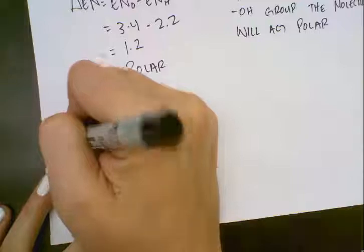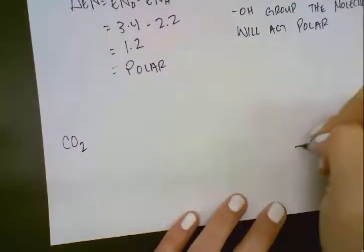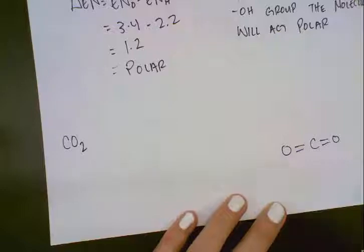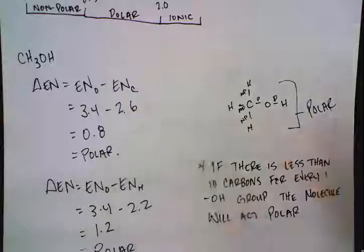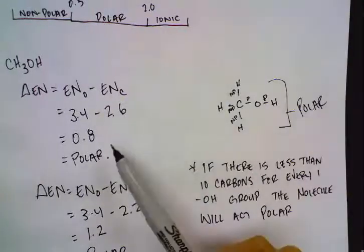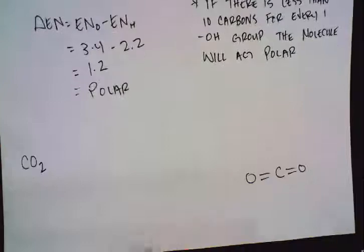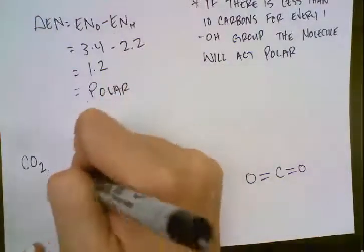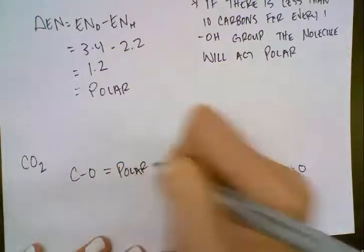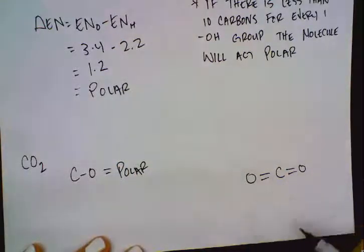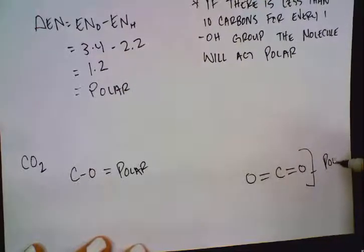The next one we're going to take a look at is CO2. If you draw the Lewis structure, it looks like this. We've actually already calculated the EN of carbon-oxygen bonds, which is right here. We've already determined that that's a polar bond, so we only have 2 polar bonds here. So we know that the carbon-oxygen bond is polar. So because we only have 2, well, 4 polar bonds, we're going to assume this is also polar.